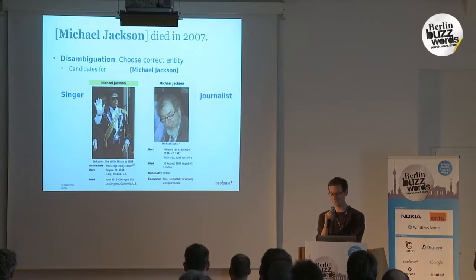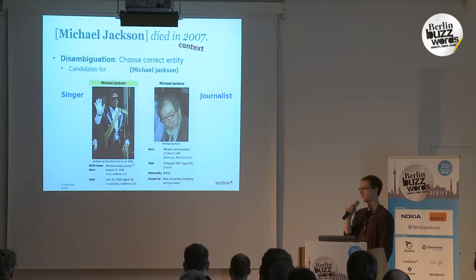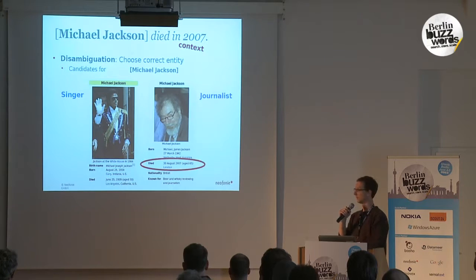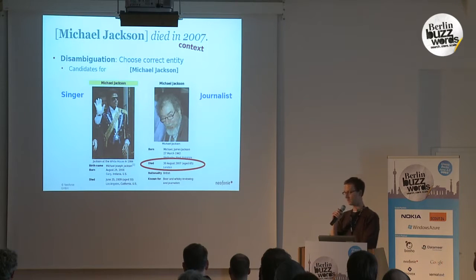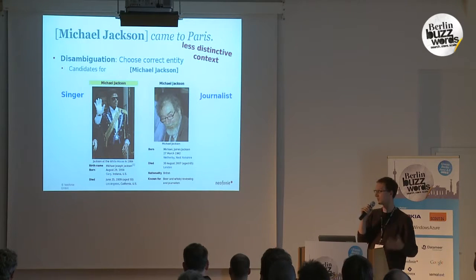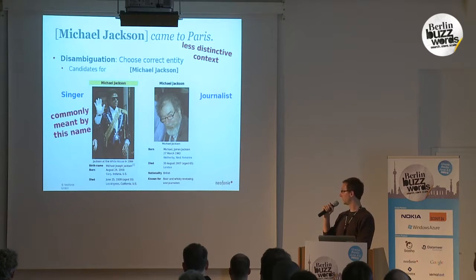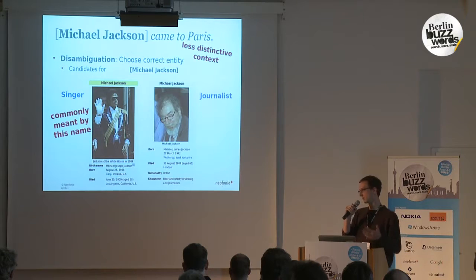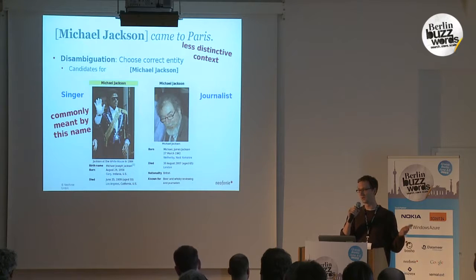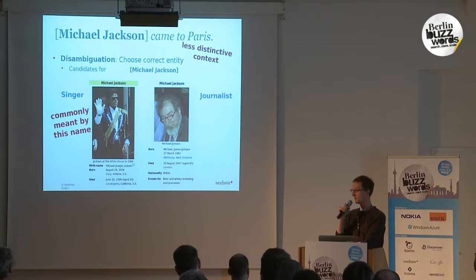What we can do is look at the context. We see that this person died in 2007, and if we know that, we know it's the journalist because the other person died in 2009. This context is very distinctive and it's a luxury to have it. You can also have something more general, like "Michael Jackson came to Paris," and you can't really tell which one it is from the context. So what you want to do here is say: usually when people talk about Michael Jackson, they mean the singer.